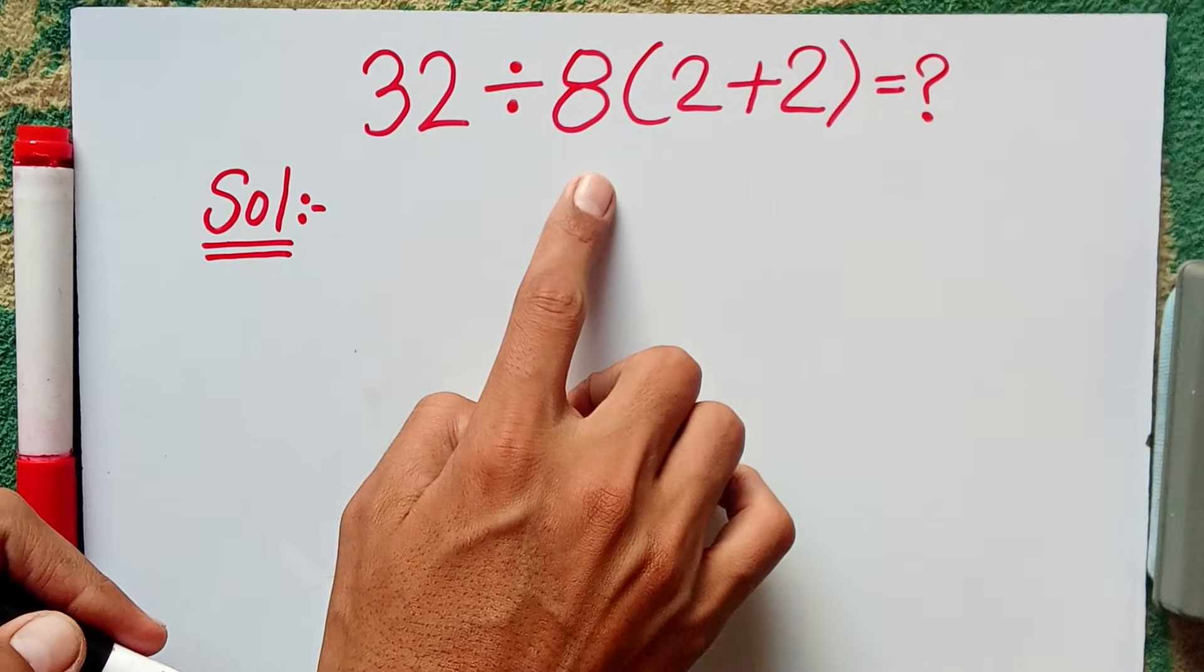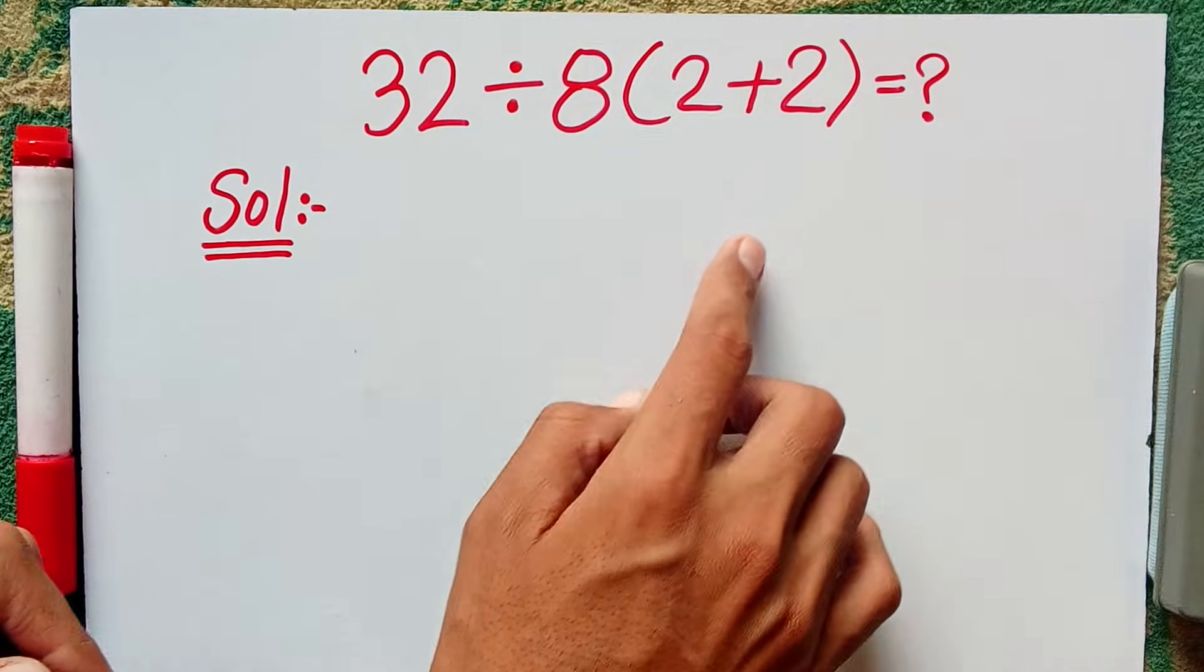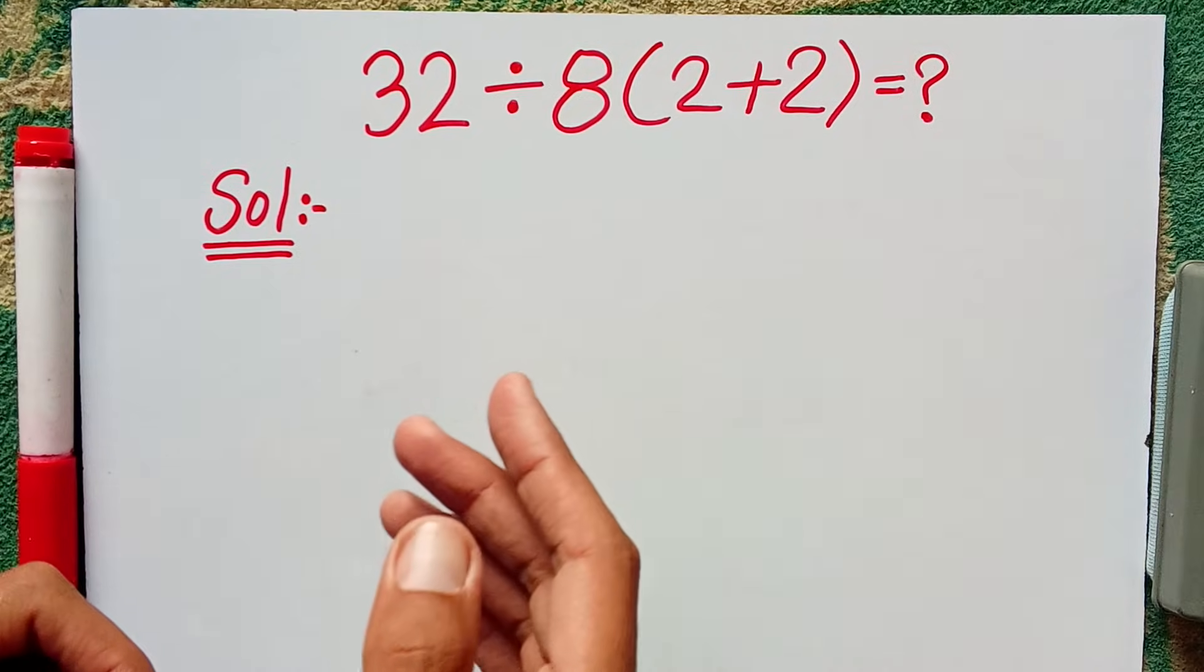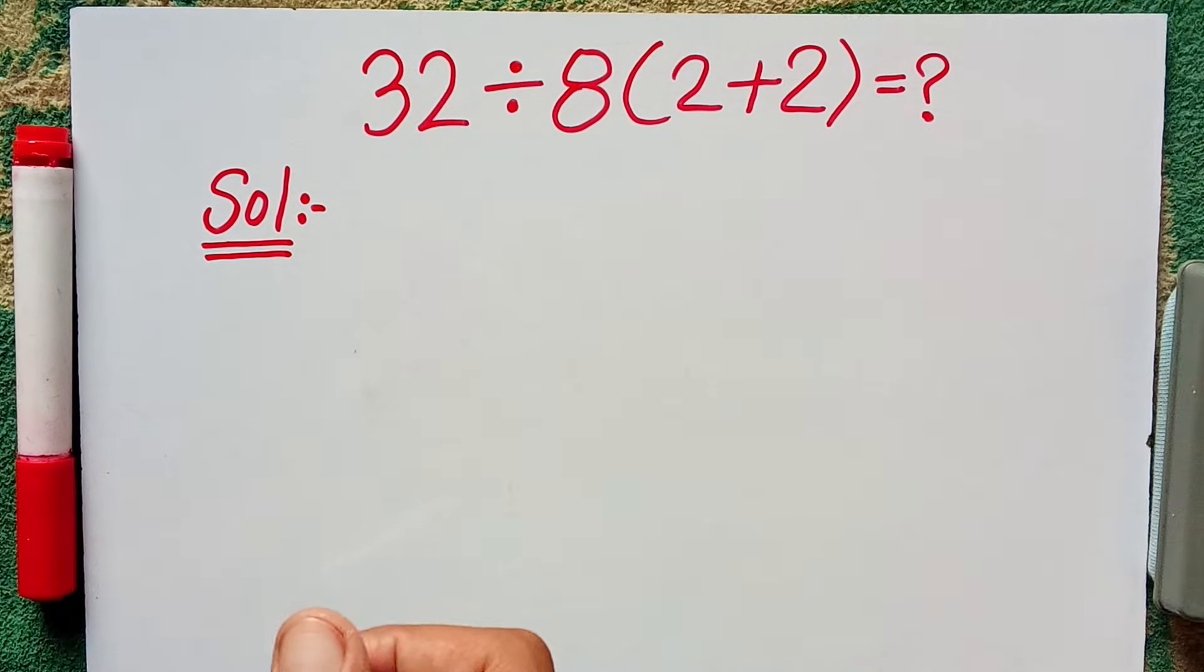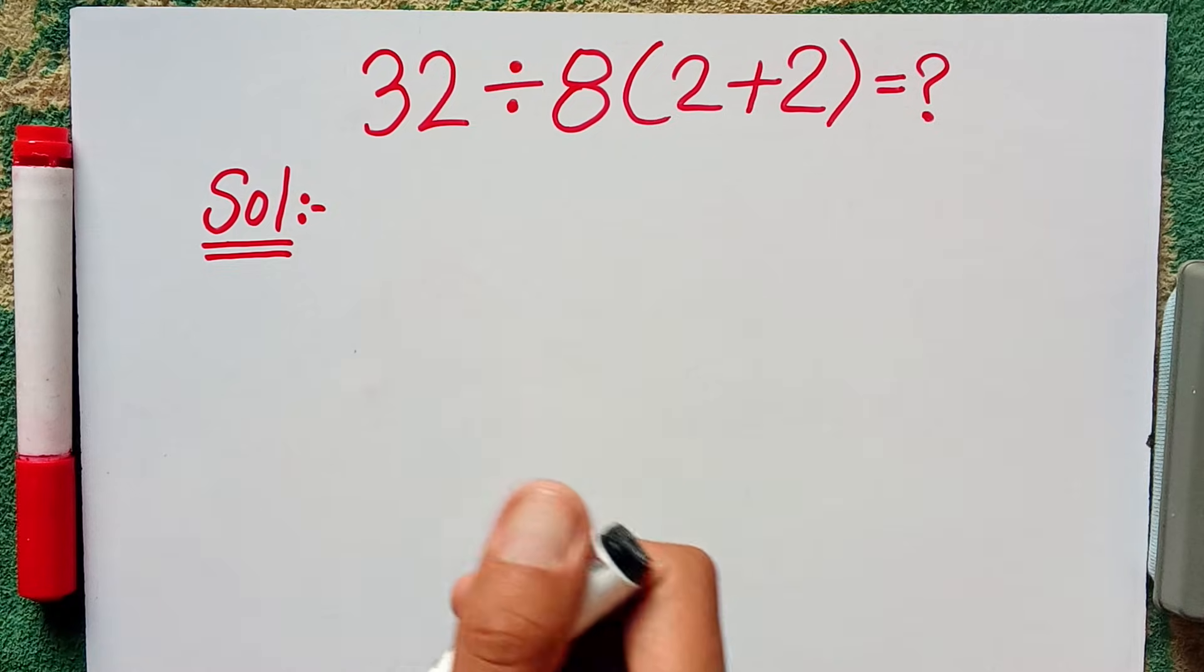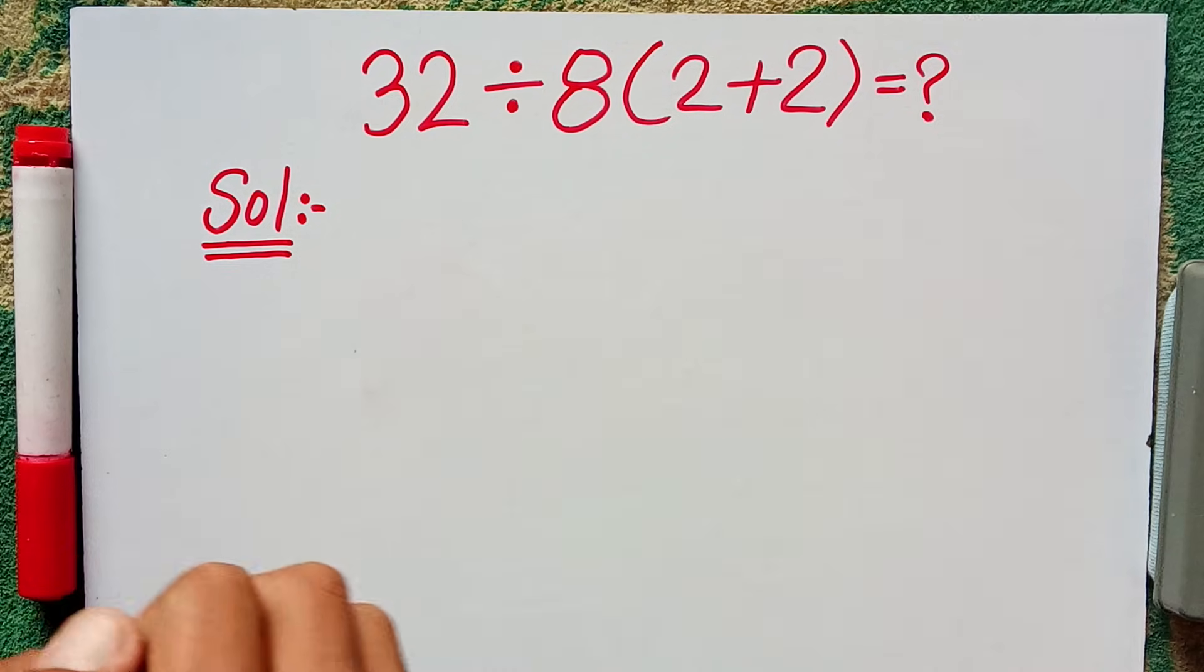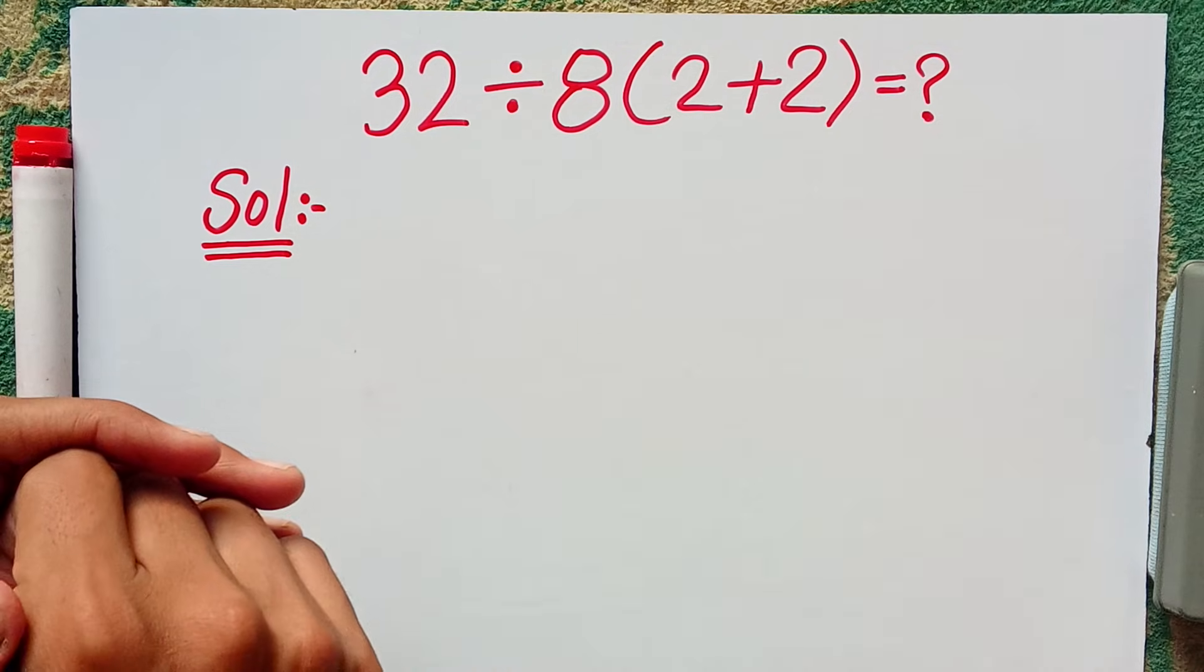32 divided by 8 parenthesis 2 plus 2. Student, if you know the answer, send your answer in the comment section and wait for my answer that either your answer is right or wrong.